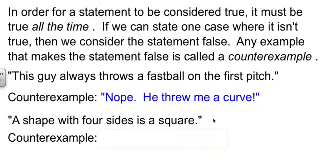Suppose someone says, a shape with four sides is always a square. No, that shape has four sides and that's certainly not a square. So that would be a counterexample.